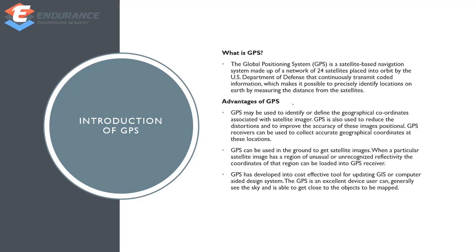GPS is a network with 25 satellites operated by the US Department of Defence. All of these transmit codes and information. The information is used to identify location and distance.